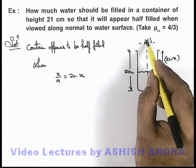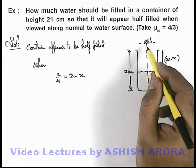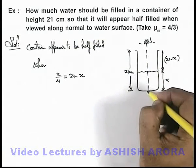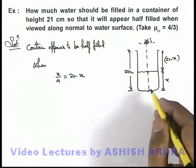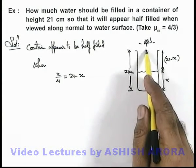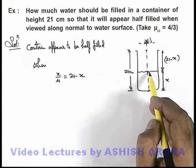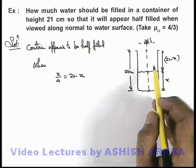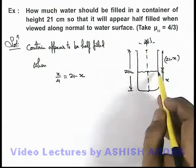That means the observer who is looking along the normal will see that the distance at which the bottom of container exists is exactly the same as the distance with air in the container where nothing is filled. That means they will feel that the container water is half filled.